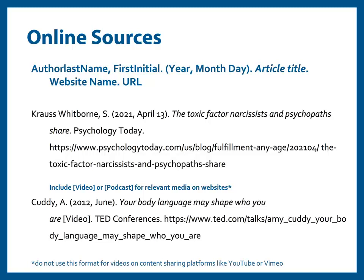For most online sources outside of library databases, the format is: author name, period, publication date in parentheses (year, comma, month spelled out in full, and day), full article title in italics, period, website name, period, URL (not followed by a period). List websites by their name — for example, Psychology Today as two words, not psychologytoday.com.